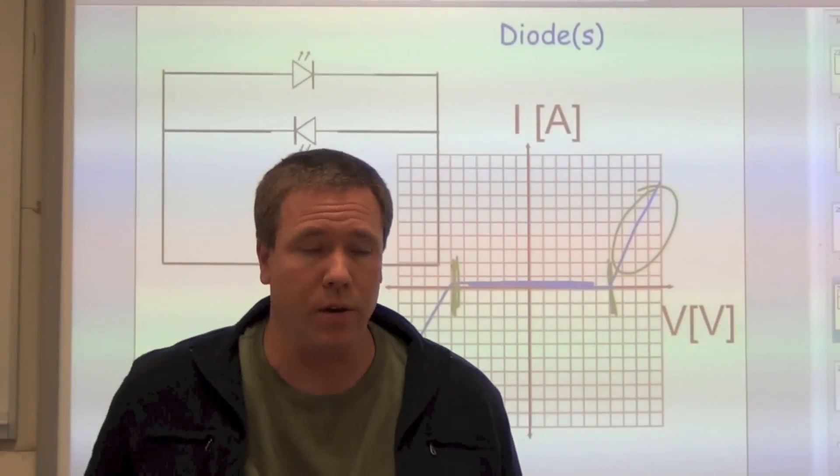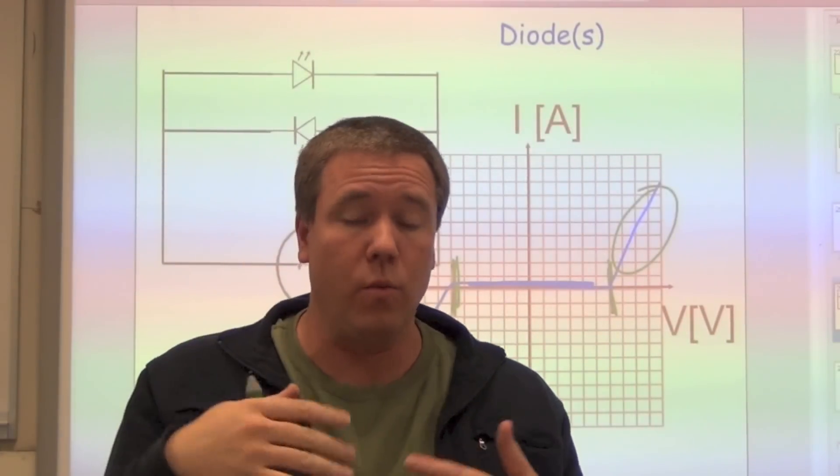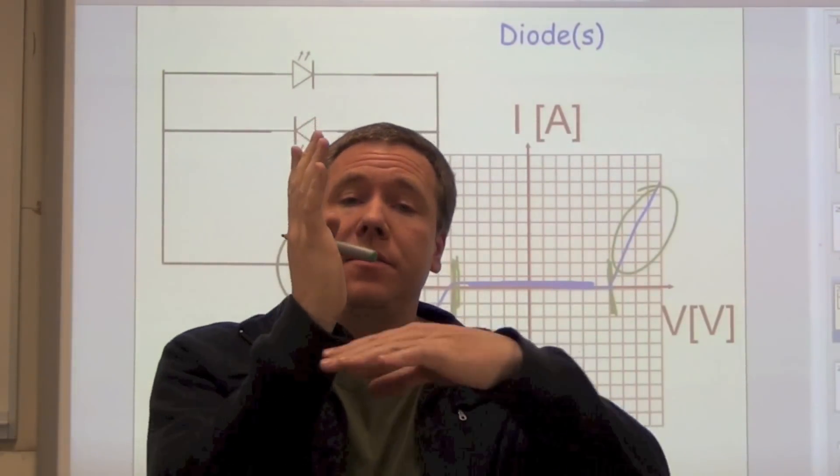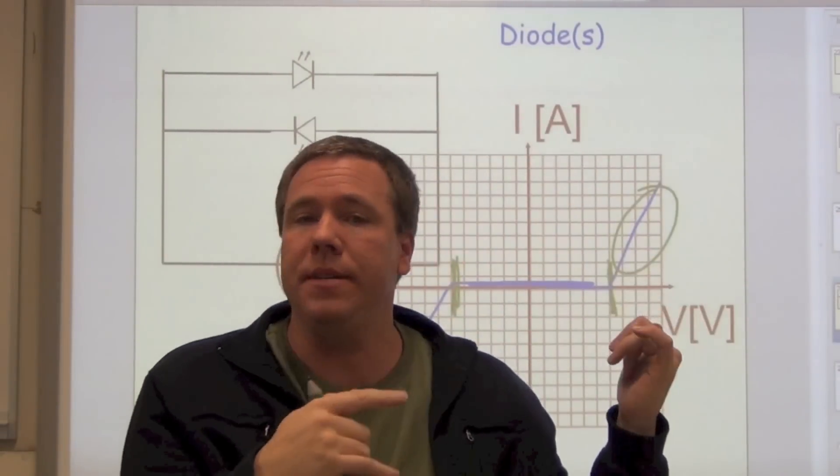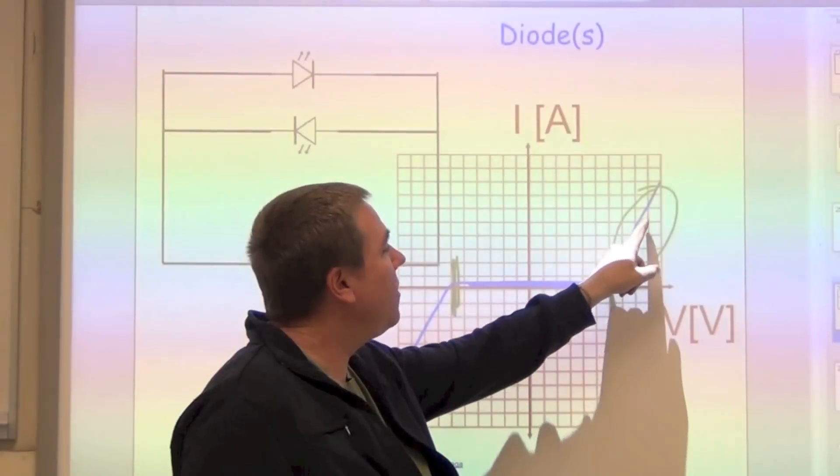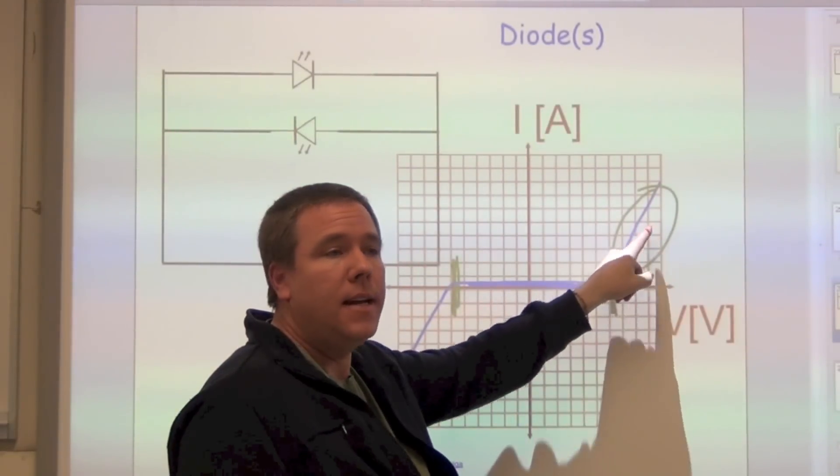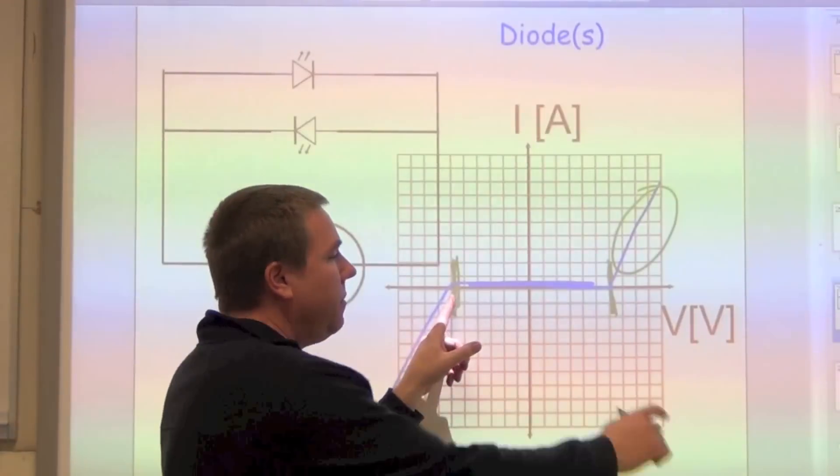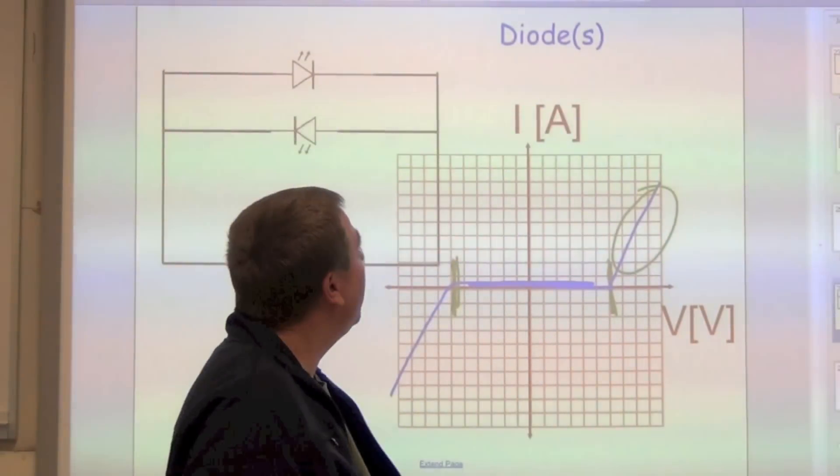Now, what does the slope of this represent? Remember what we're plotting. We're not plotting voltage versus current. We're plotting current versus voltage. So the slope is not resistance, but it's the inverse of the resistance. So on this plot, I want you to find, first of all, what's the threshold? And then what's the resistance? Now, there's a couple things you need to think about. The threshold here and here are going to be different. Why?